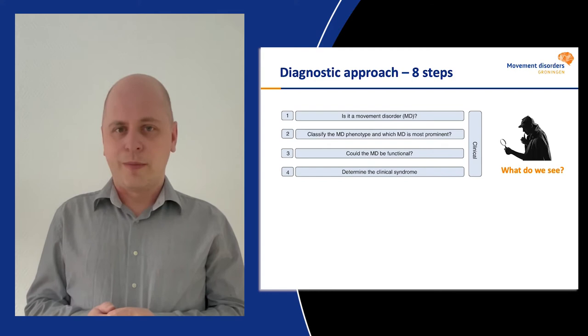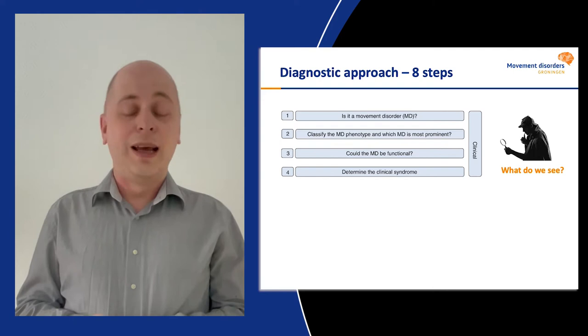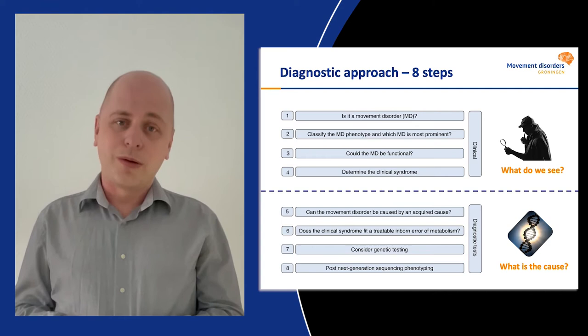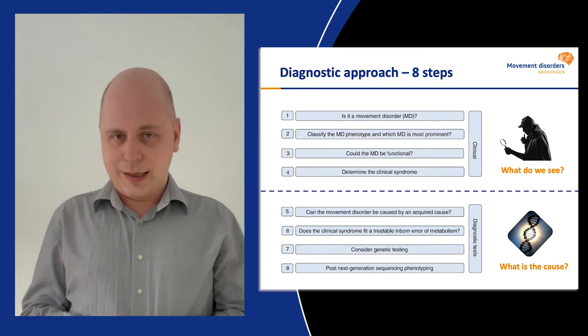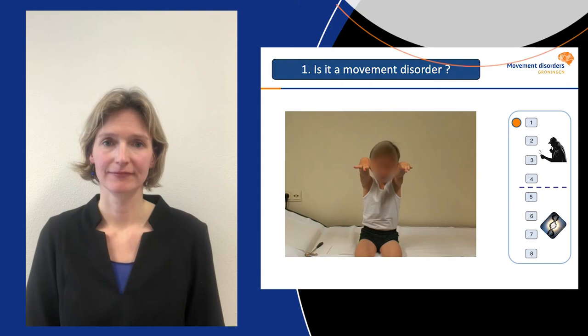The first and most important step is to determine if there is a movement disorder. The second step is to classify the movement disorder and determine the most prominent one. You should always consider a functional disorder. The last step is to determine a clinical syndrome with the additional signs in your patient. The last four steps answer the question of what is the cause: consider acquired causes and treatable inborn errors of metabolism. If not, the next step should be genetic testing. Post-NGS phenotyping is the final step to evaluate if the results of genetic testing fit the possible clinical phenotype.